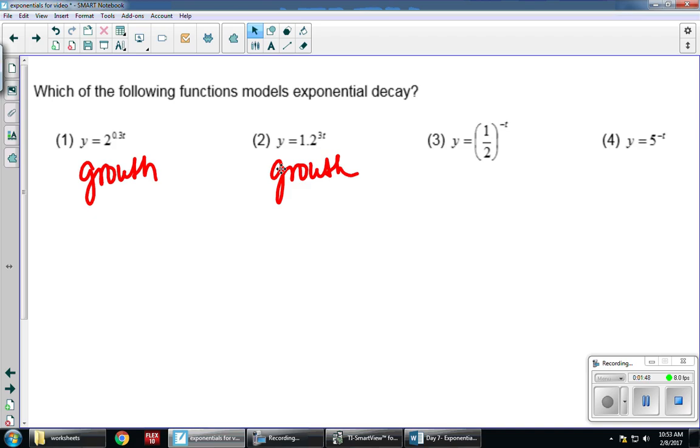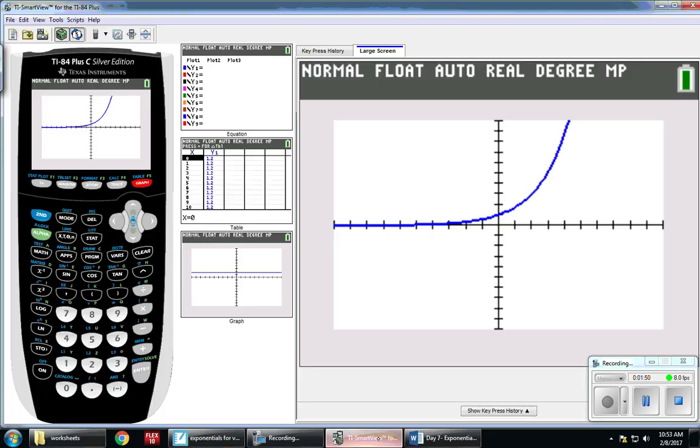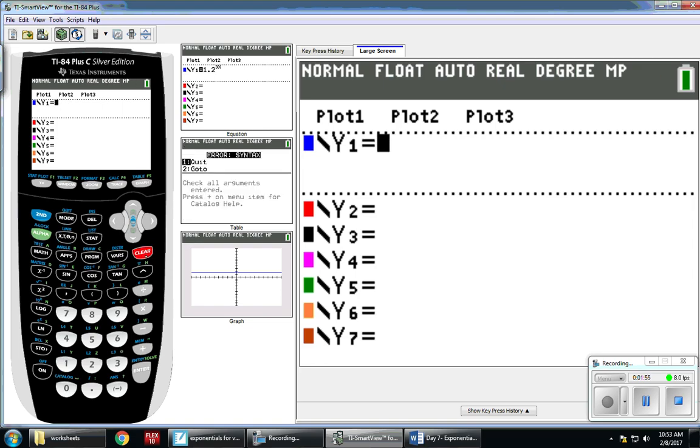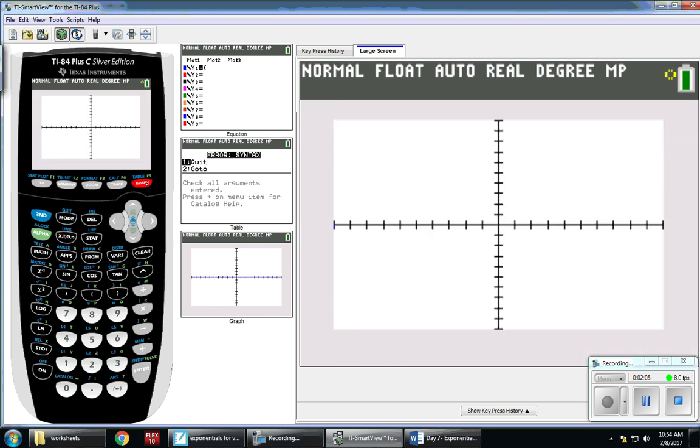So now I have 1.2 to the negative t power. I'm going to clear out what's there. I have 1.2 to the negative x power. Take a look at my picture. Once again I have growth.